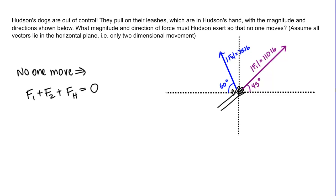To do that we need to know a bit more about F1 and F2, and specifically we need to resolve them into their components. Let's start with F1 and figure out what the X and Y components of F1 are. It's usually pretty simple to resolve a force into its X and Y components using an angle. For force 1, the X component is going to be 110 — the magnitude — times cosine of 45, because we're on the adjacent side of this angle. The Y component is going to be 110 times sine of 45.